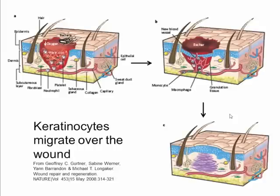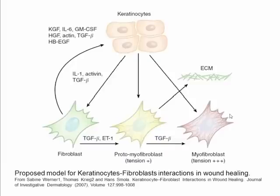Keratinocytes have an important role in repairing the epidermis if it is damaged. There are complex interactions between keratinocytes and fibroblasts when we are looking at wound healing involving the dermis, and we will discuss that further later.